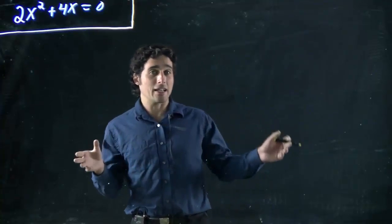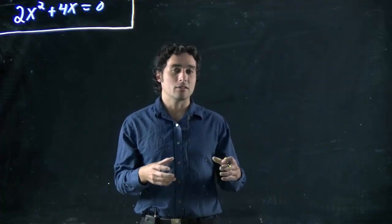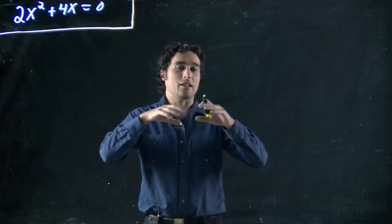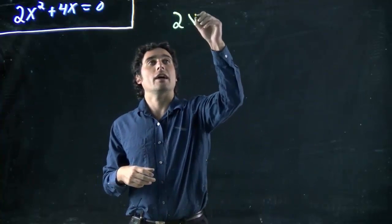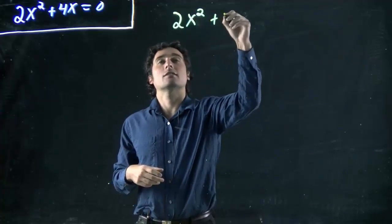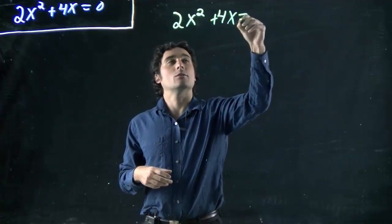So we've got to do factoring. In the previous videos we looked at expanding out terms. This is kind of the opposite. We're taking things and putting the brackets into the problem. So what do we got? We have 2x² + 4x = 0.